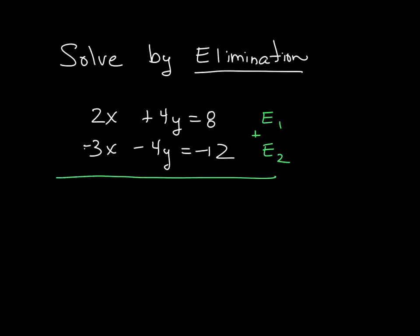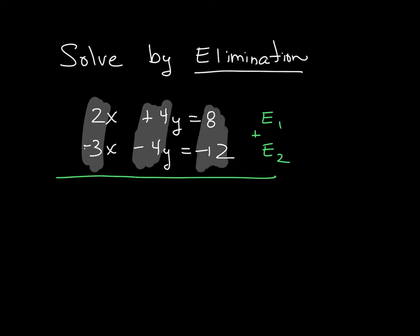When I'm doing that, what I'm really seeing is I'm just taking the coefficients in front of x and adding them together, taking the coefficients of y and adding them together, and then adding my constants together. When I do that, 2 minus 3 is just leaving me with negative x.